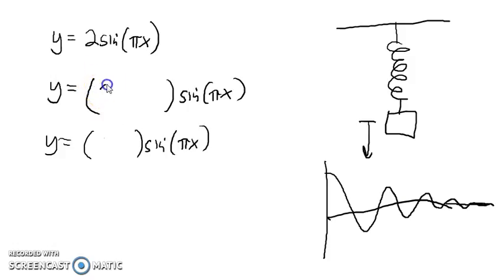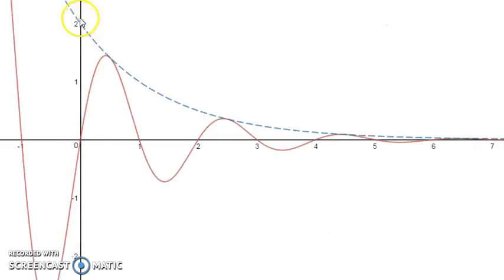For example, if we did 2 times 0.5 to the x, this would be a decreasing exponential. Here you can see we have an exponentially decreasing amplitude, and the function is again oscillating above and below the midline going up to that amplitude.